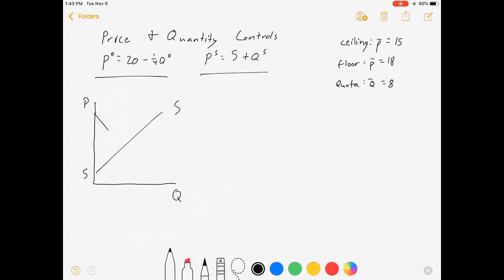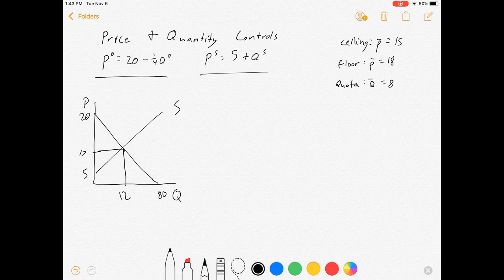Supply curve starts at 5, demand curve starts at 20. So I guess it goes all the way down there to $80. So there's the setup. And our equilibrium, if you wanted to know, has a price of $17 and a quantity of 12. So there's sort of our starting lineup, but we don't need that information, so I'm not going to let it muddy our graph.